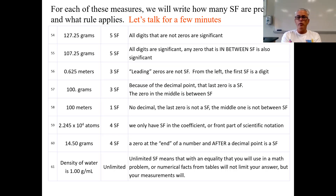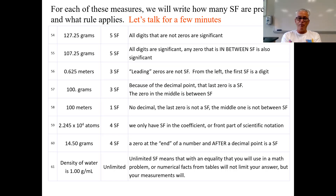Number 60: another place to put a zero is at the end of a decimal. This is different from number 58. With 14.50 grams, the 1, 4, and 5 are all significant. But this zero is at the end after a decimal, which means you measured that there are five tenths and no hundredths of a gram. So this counts for four significant figures.